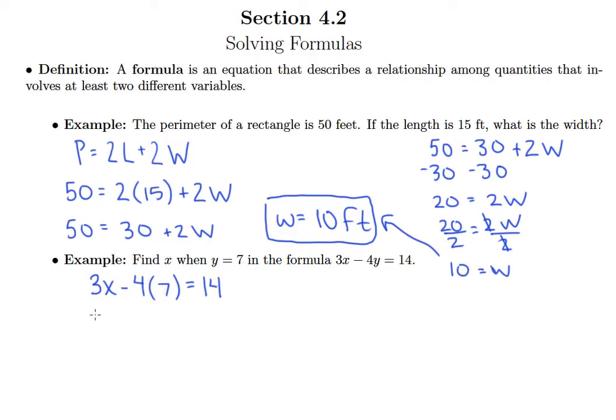We can multiply 4 and 7 to make 28 and then go about isolating x. We'll add 28 to both sides, so 3x equals 42.